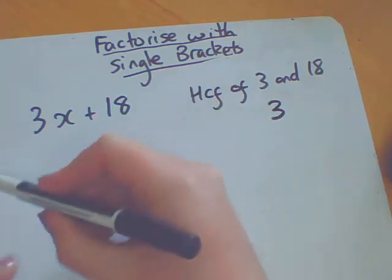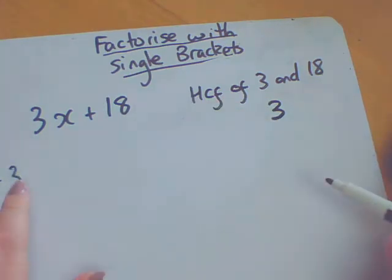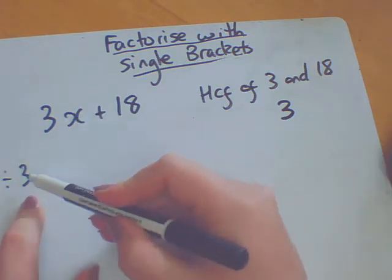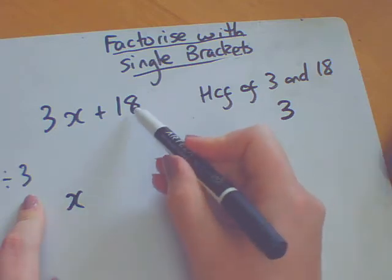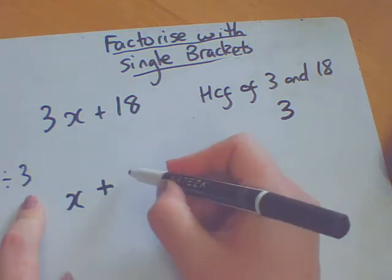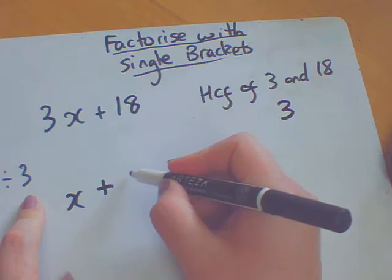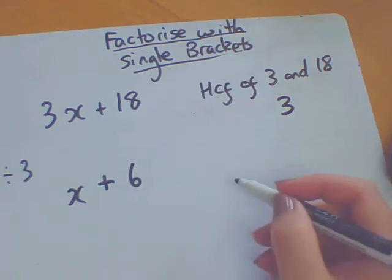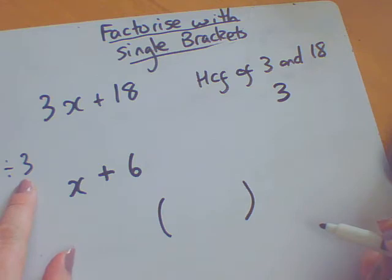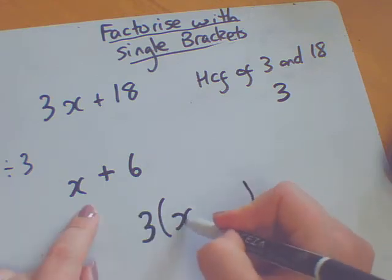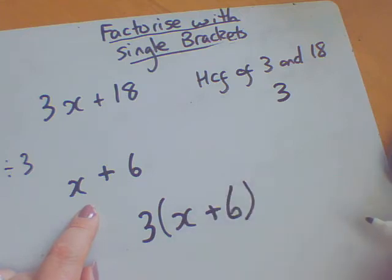Which means I'm going to divide everything in this by 3. 3x divided by 3 is just a single x. 18 divided by 3 is going to give me, you're right, 6. Well done. So I'm going to put all this together. Single set of brackets. The highest common factor is 3. That goes on the outside. This section here goes on the inside.